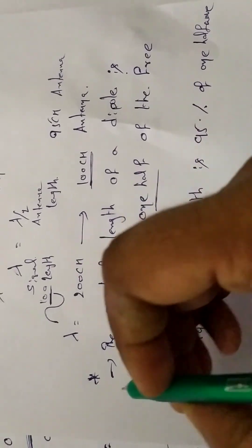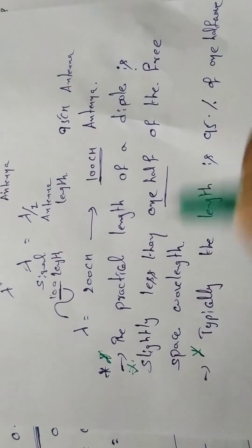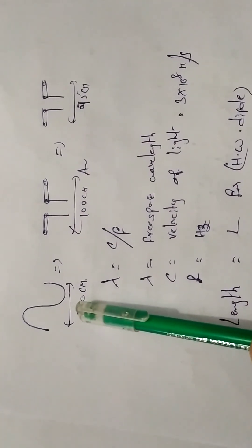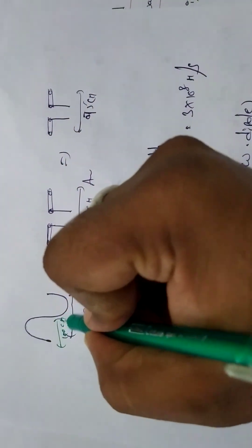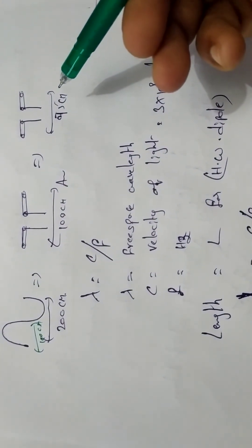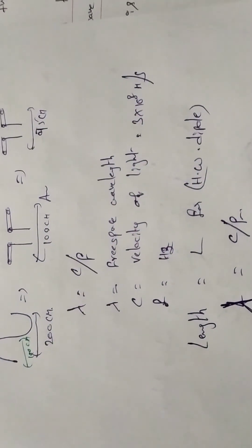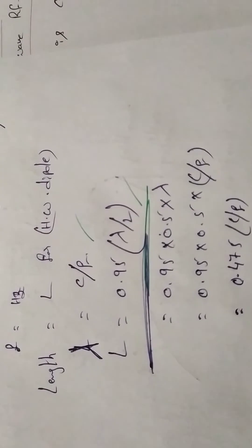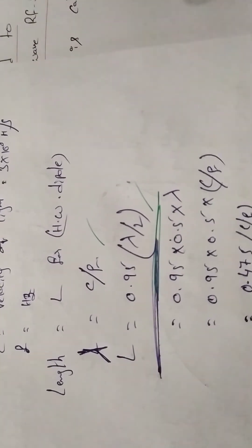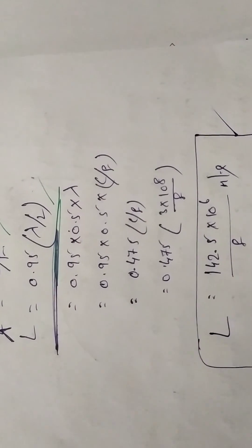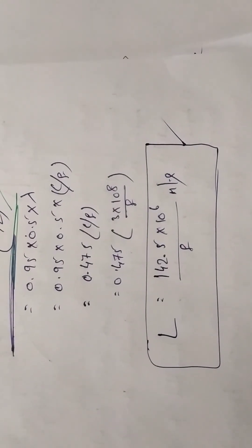This is the main point: the face-to-face length of the dipole. For example, for a 200 cm wavelength, we make it half — 100 cm theoretically. Practically, 95% is used — that is 95 cm. The formula is L = 0.95 × 0.5 × (c/f), where c = 3 × 10^8 and f is the operating frequency. This is the half-wave dipole design.